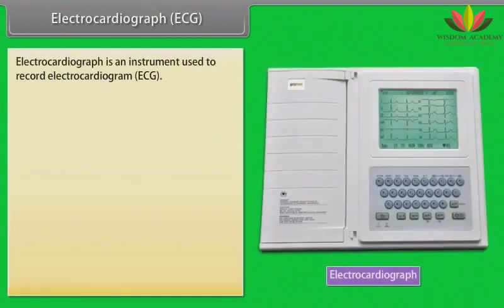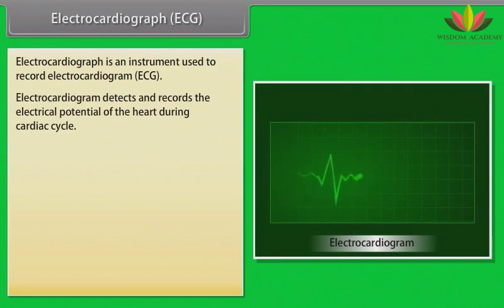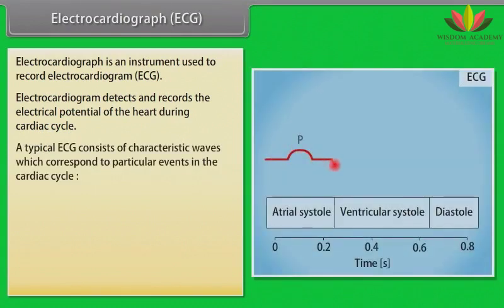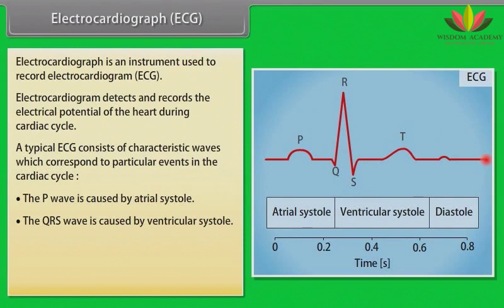Electrocardiograph (ECG). An electrocardiograph is an instrument used to record an electrocardiogram. The ECG detects and records the electrical potential of the heart during the cardiac cycle. A typical ECG consists of characteristic waves: the P wave is caused by atrial systole, the QRS wave is caused by ventricular systole, and the T wave coincides with ventricular diastole. The heart rate can be calculated from the interval between one P wave and the next.